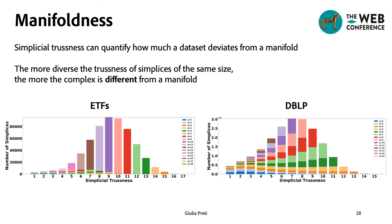In these plots, we can see the number of simplices per simplicial trussness value, where different colours indicate simplices of different sizes. The more diverse are the trussness values of simplices of the same size, the more the data set is different from a manifold.